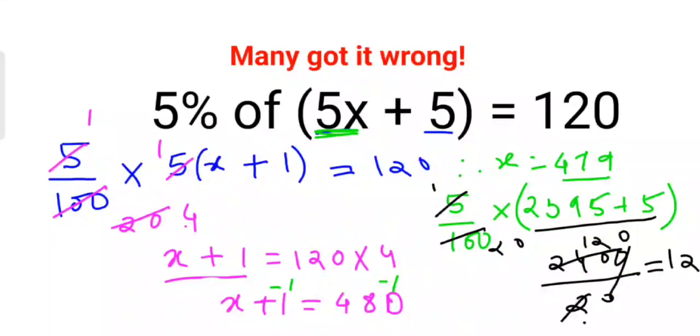So which is the answer or which is your RHS of the question. So here I can say that the value of x is nothing but what? 479. That's it for today. I will see you in the next video.